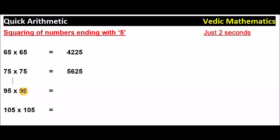95 times 95. 5 times 5 is 25, and after 9, what is the number? 10. 9 times 10 is 90. So the answer is 9,025.